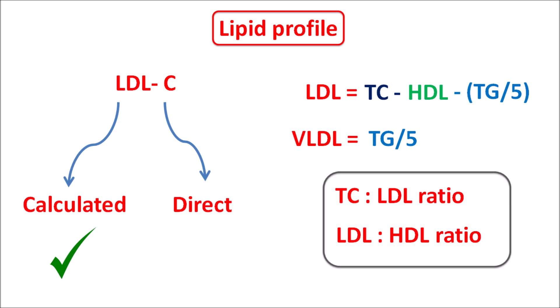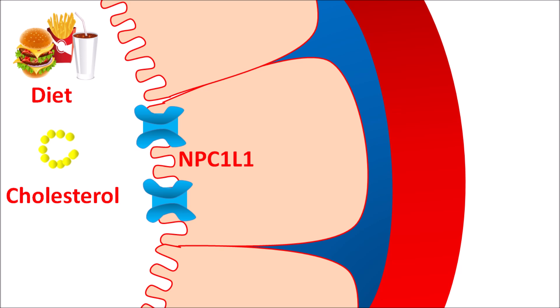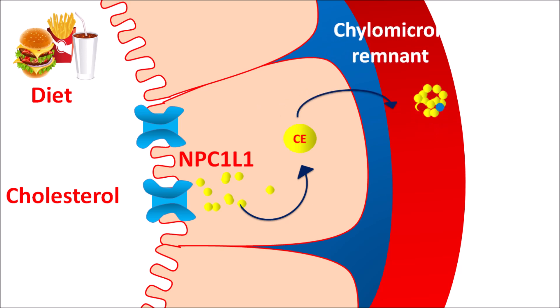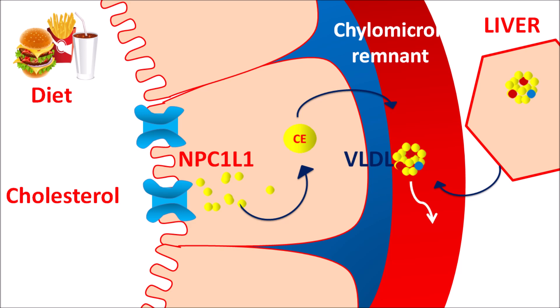Now let us discuss the normal role of these lipoproteins and what happens when they are elevated. From the dietary fat, cholesterol is released and absorbed at the ileum through special transporters. The cholesterol enters the membrane where it is converted into cholesterol esters, which are absorbed through chylomicrons. The remaining portion is called the chylomicron remnant. This chylomicron remnant, which is rich in cholesterol, is taken up by the liver, where cholesterol is stored and then released as VLDL. This VLDL is rich in triglycerides. From VLDL, some triglycerides are converted into free fatty acids, and it is secreted as LDL.